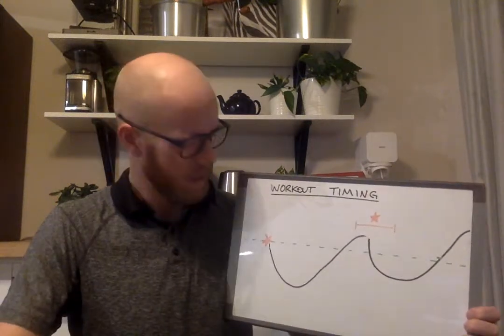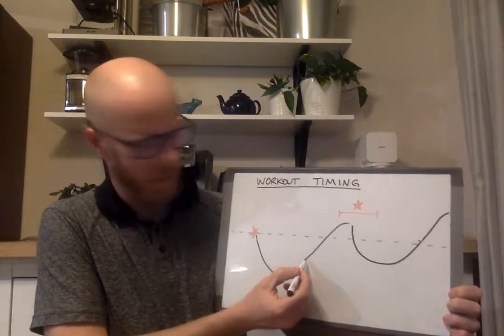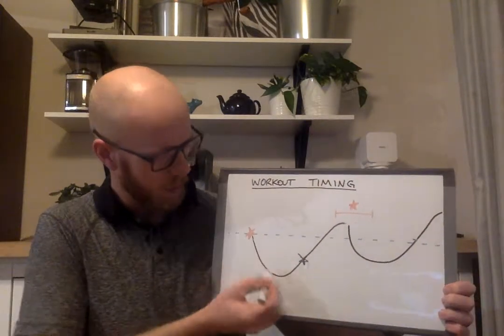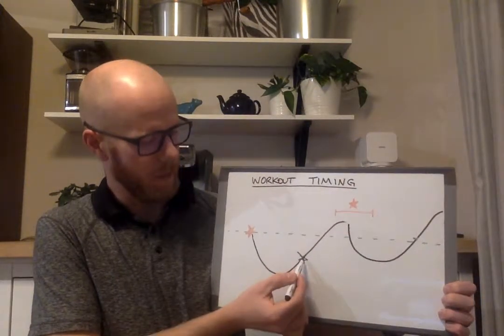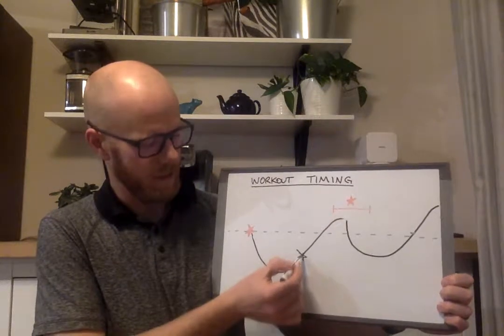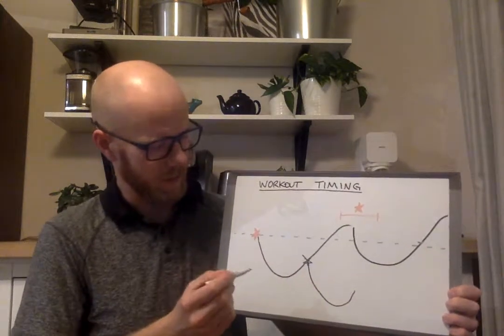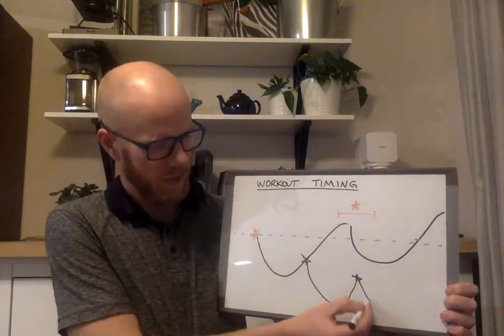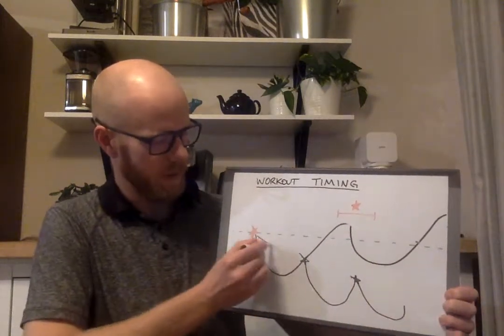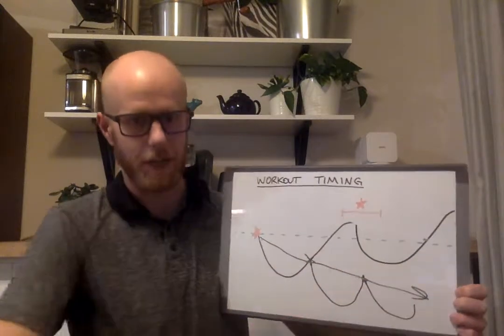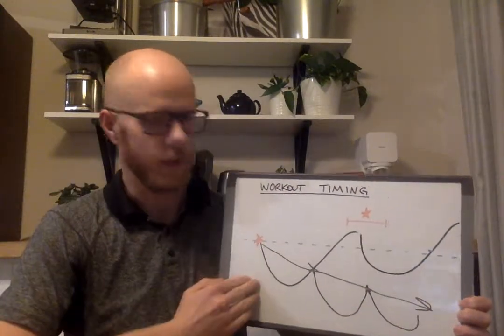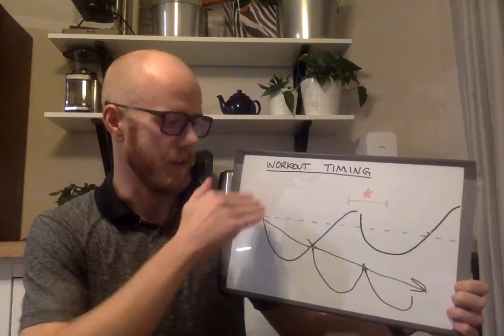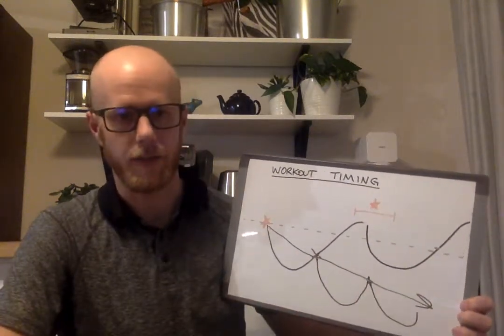So what ends up happening there is if we do our next hard workout somewhere in here our fitness is depressed and then we get another big hit to it so it's going to go down something like that, then if we don't come all the way back and our next workout was there then we're going to do that. So all of a sudden our fitness is on this big downward trend, that's where you start to get into the realm of over-training, over-reaching and it continues on this downward progression.